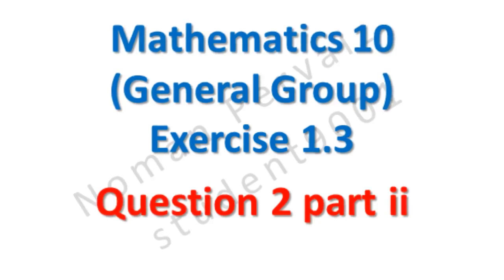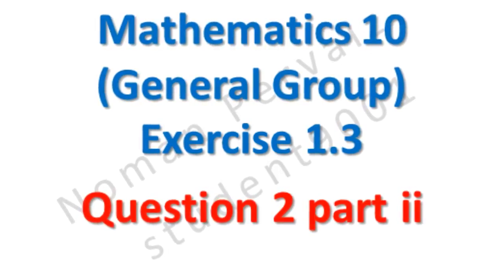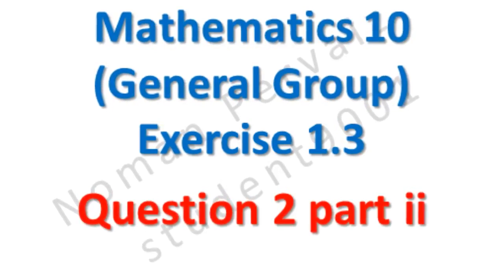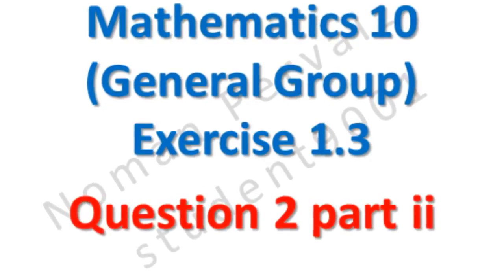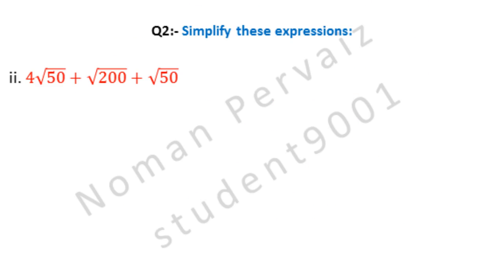Next, we are going to solve part 2 of question number 2 of 10th class math, general group, exercise 1.3. Question 2 is: simplify these expressions. And part 2 is 4 under root 50 plus under root 200 plus under root 50. Let's see its solution.